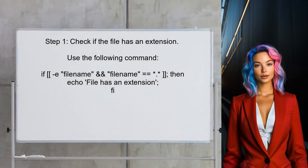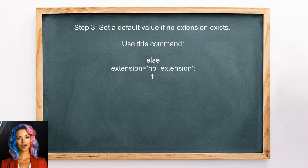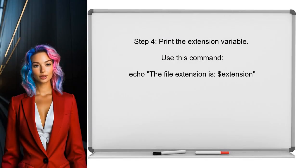To begin solving the problem, we need to check if the file has an extension. You can do this by using the test command in Bash to see if the file exists and if it has a dot in its name. If the file does have an extension, you can extract it using parameter expansion to get the part of the file name after the last dot. However, if the file does not have an extension, you can set a default value for the extension variable using an else statement. Finally, print the extension variable to confirm whether the extraction was successful or if the default value was used.